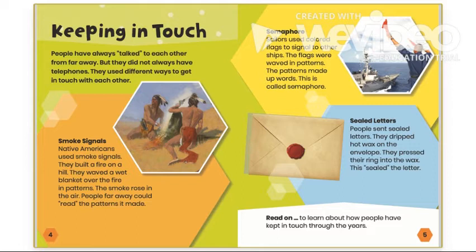Keeping in Touch. People have always talked to each other from far away, but they did not always have telephones. They used different ways to get in touch with each other. Smoke Signals: Native Americans used smoke signals. They built a fire on a hill. They waved a wet blanket over the fire in patterns. The smoke rose in the air. People far away could read the patterns it made.